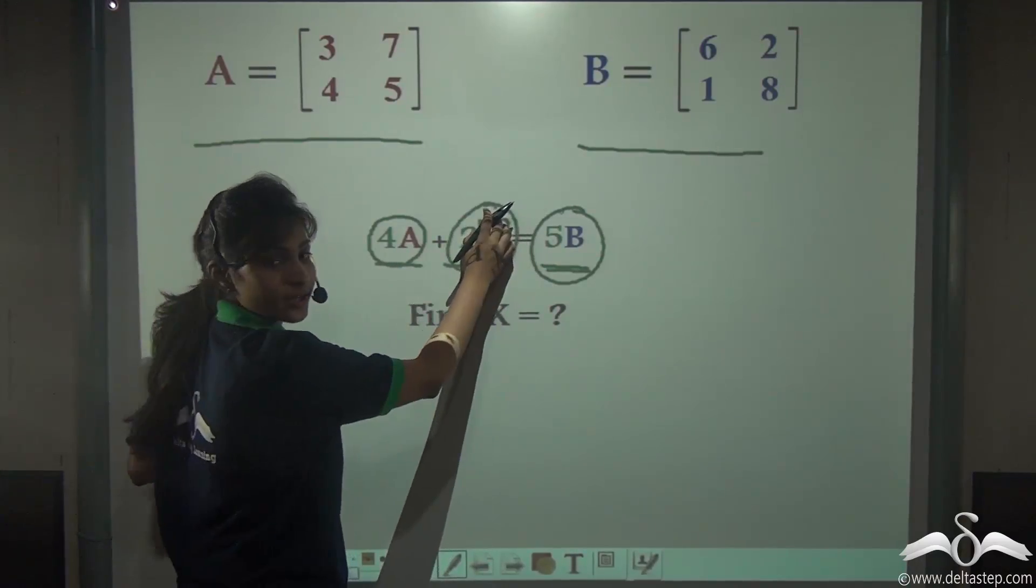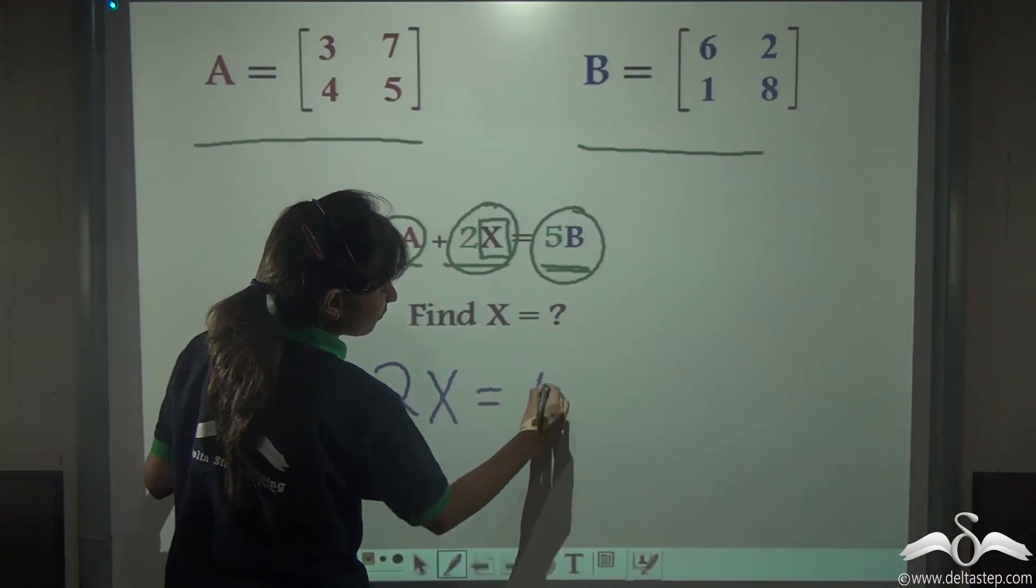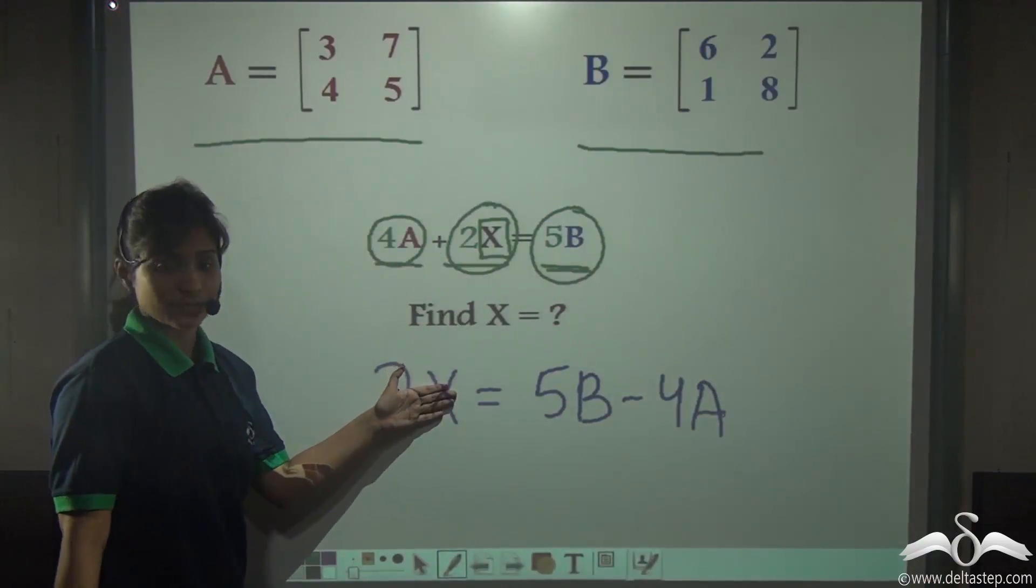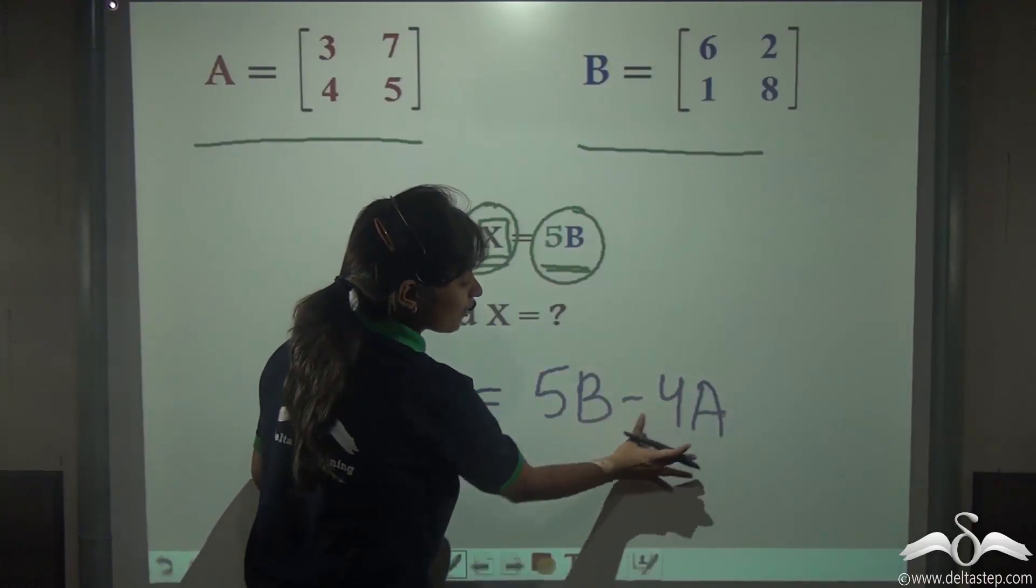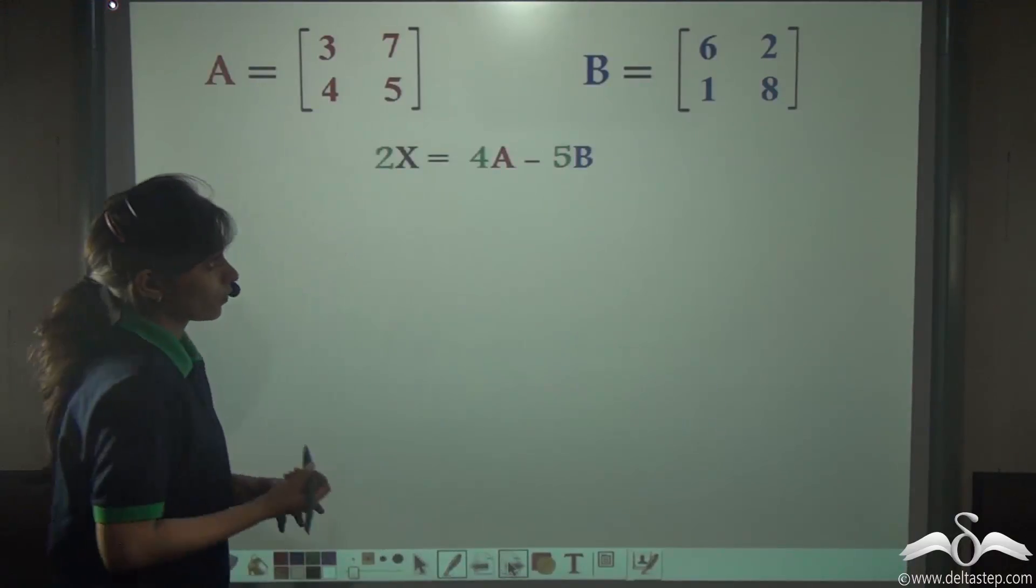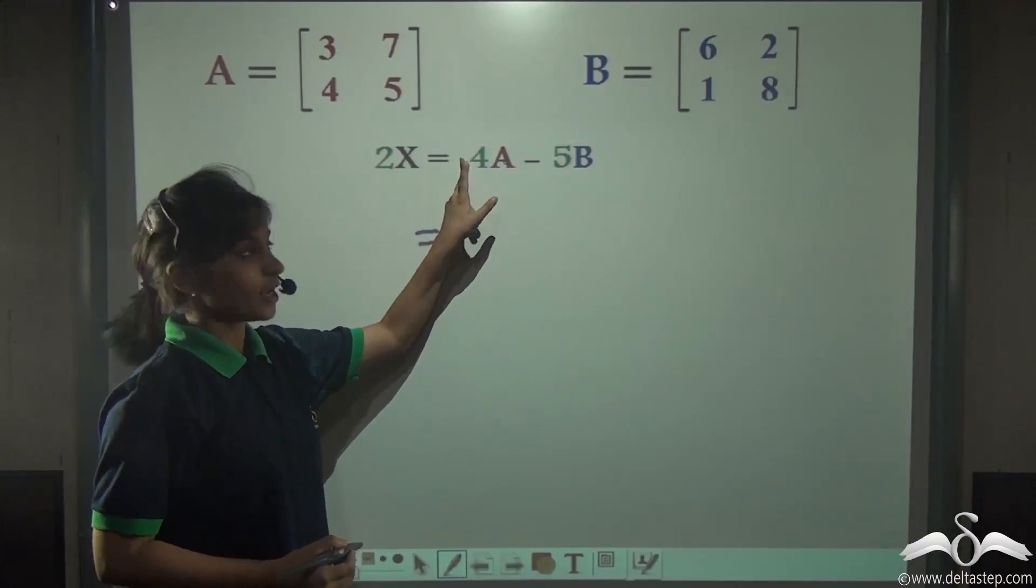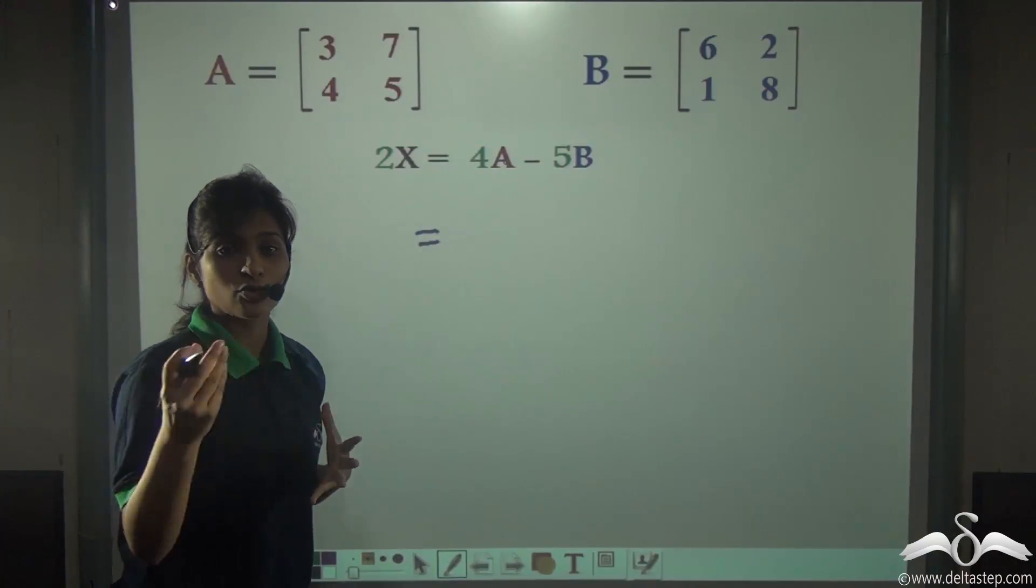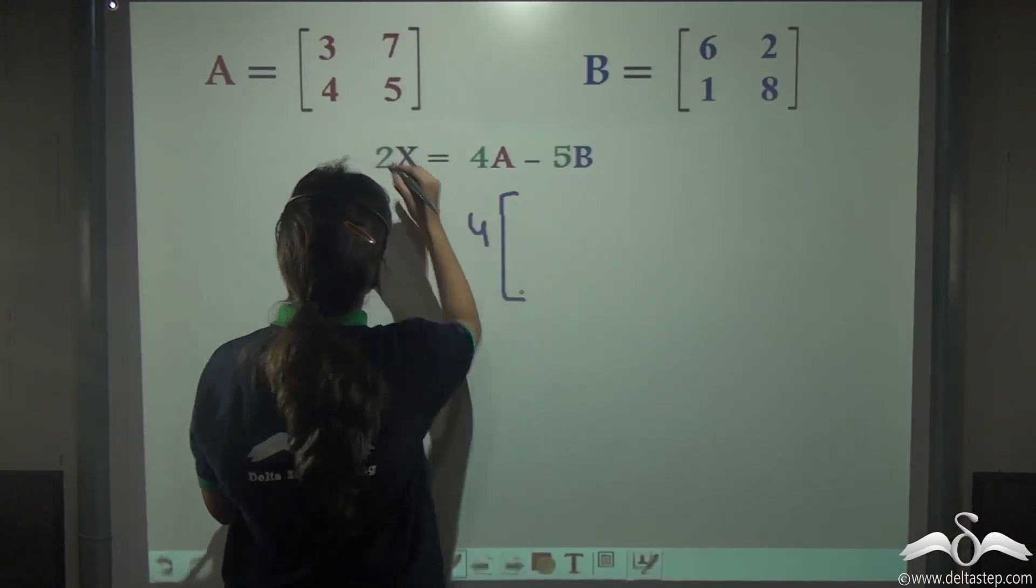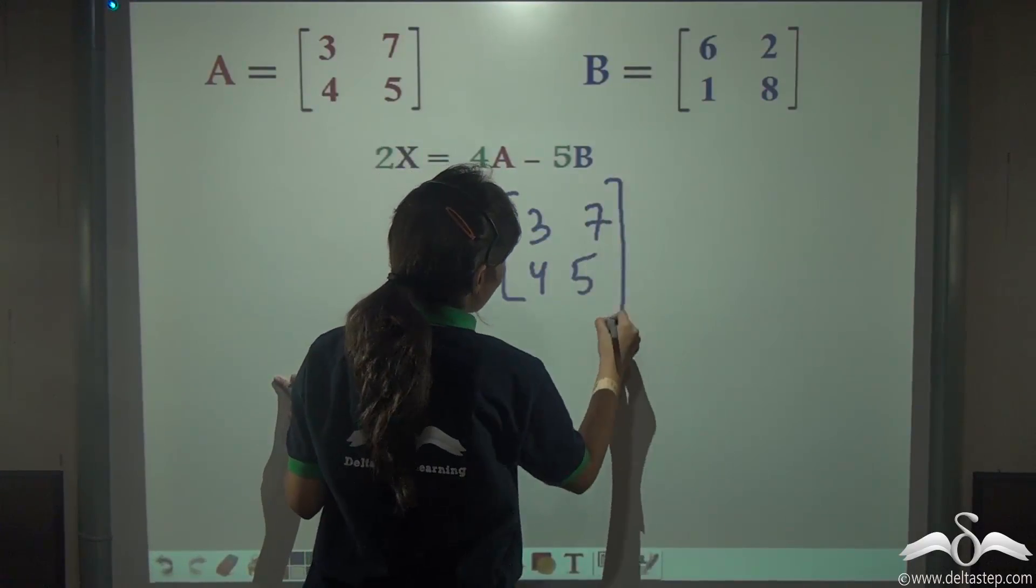First, let us make X the subject. 2X is equal to 5B minus 4A. Before making X the subject and removing 2 from here, let us find out 5B minus 4A so that we know what is actually 2X.